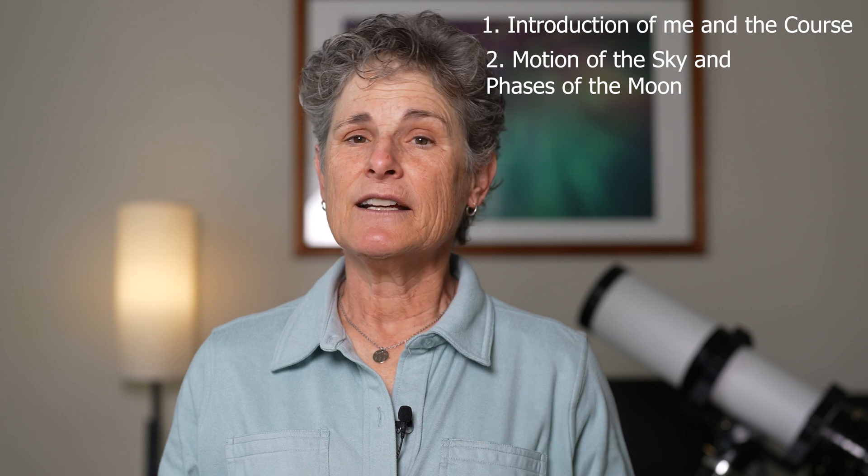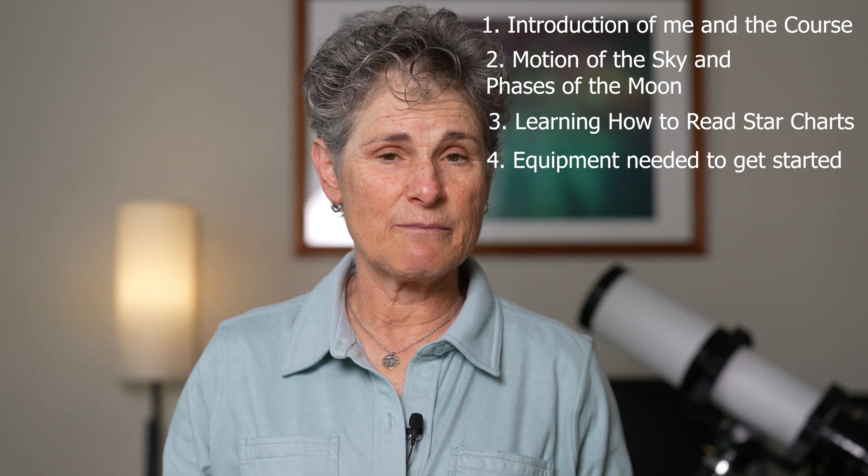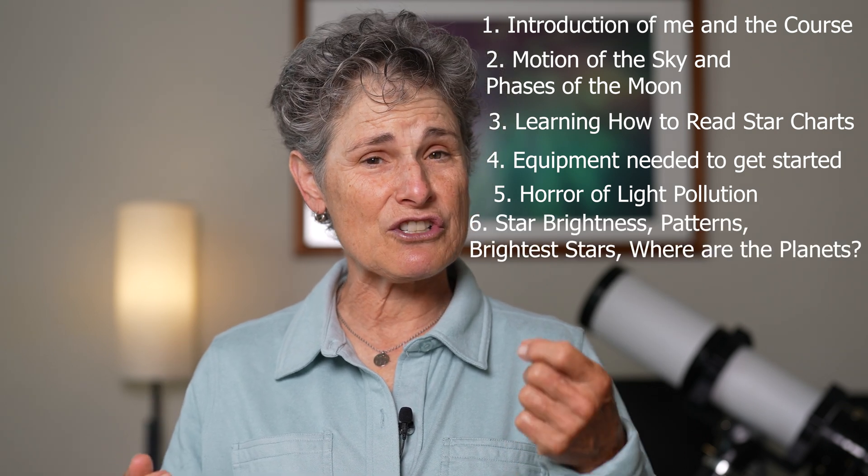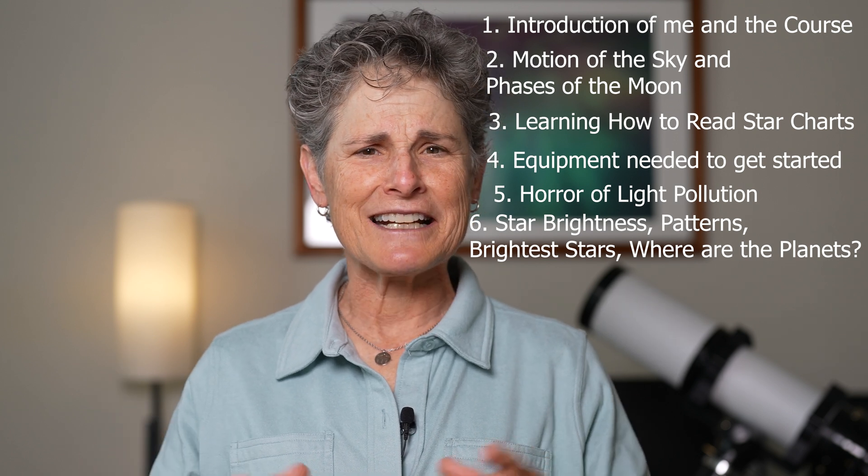Now that I've told you about myself and my credentials, let me tell you the rest of the outline for this course so you'll know where we're heading. Day one: introduction of myself, my credentials, and the course. Day two: understanding the motion of the sky, how the sky works, and also the phases of the moon. Day three: learning how to read star charts, learning distances in the sky, and learning what the constellations are. Day four: getting started learning the night sky — what equipment do you need? Day five: let's talk about light pollution. Day six: star brightness and star patterns — what are the brightest stars and brightest constellations, where are they, where are the planets, and how do you find them?